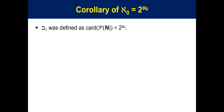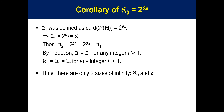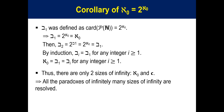The corollary of ℵ₀ equals 2^ℵ₀ is as follows. Beth₁ was defined as card P(N) which is 2^ℵ₀, which is ℵ₀ now. Then beth₂ equals beth₁, and by induction, beth_i equals beth₁ for any integer i. Thus there are only two sizes of infinity: ℵ₀ and C. Thus all the paradoxes of infinitely many sizes of infinity are resolved.